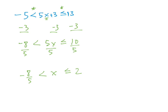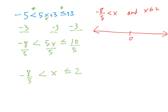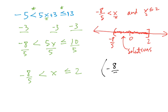If we graph this on a number line, x is greater than negative 8 fifths — on the negative side with a parenthesis going right — and x is less than or equal to 2 — with a bracket. The solution is any number between negative 8 fifths and 2. In interval notation, we write from negative 8 fifths with a parenthesis, up to and including 2 with a bracket.